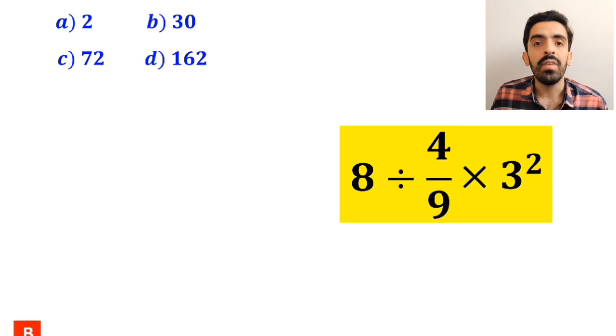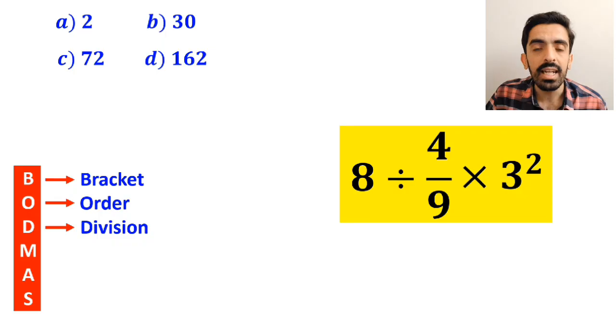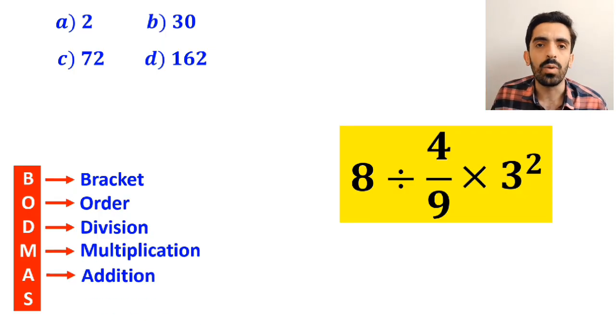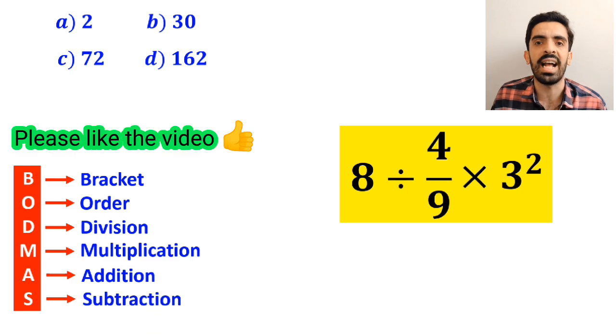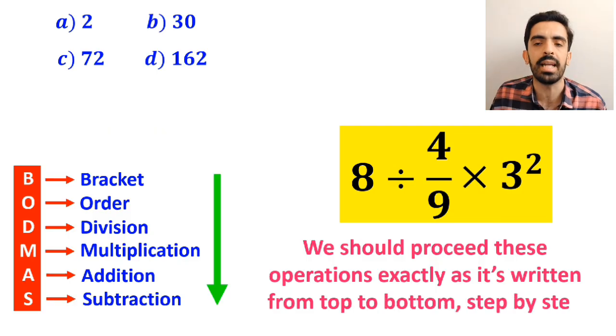To solve this question, we must follow the BODMAS rule. In this rule, B stands for bracket, O stands for order, D stands for division, M stands for multiplication, A stands for addition, and S stands for subtraction. We should proceed these operations exactly as it's written from top to bottom step by step.